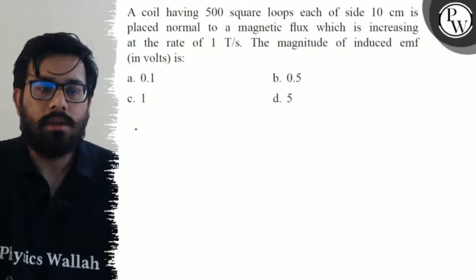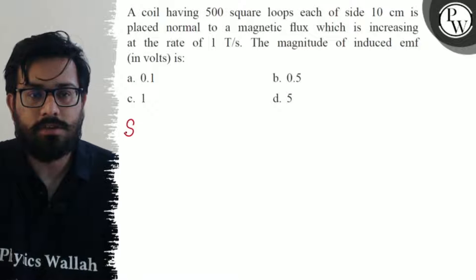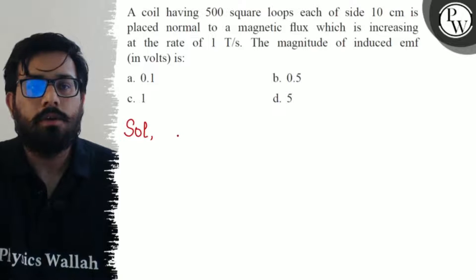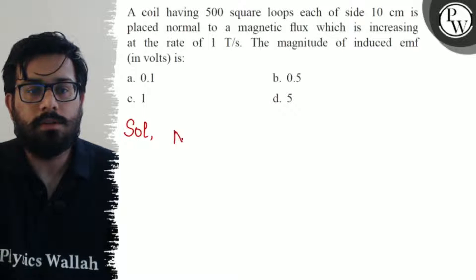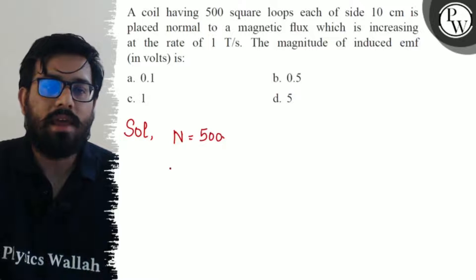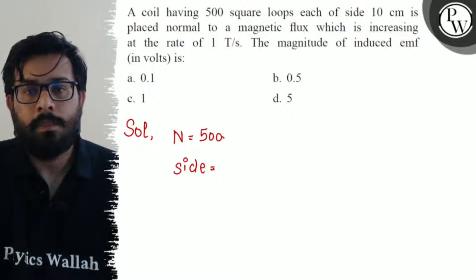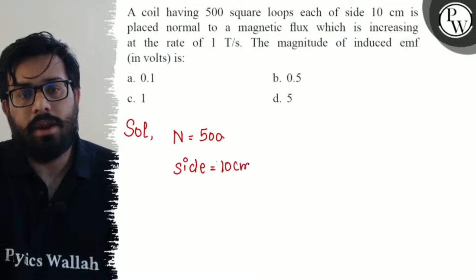Let's see the solution of this question. First, let's write the given data. The number of turns N is given as 500. We have a square loop whose side is given as 10 centimeters. Converting to meters, we get 0.1 meters.